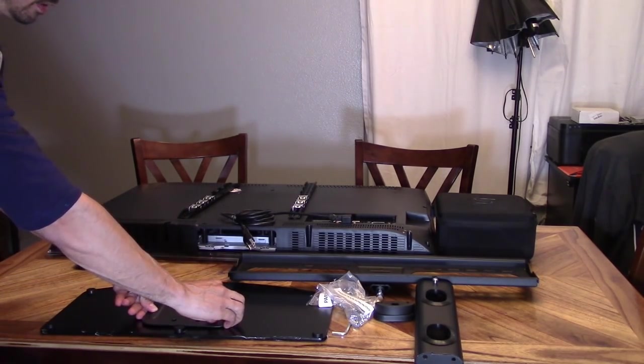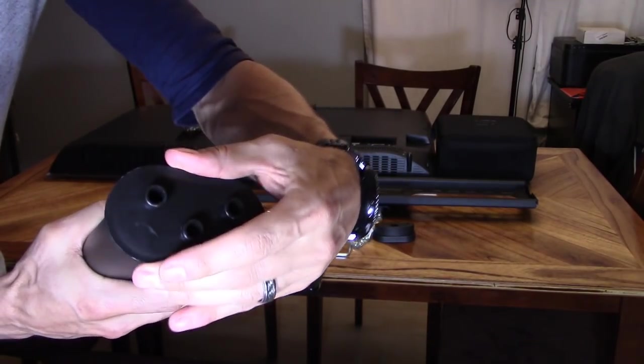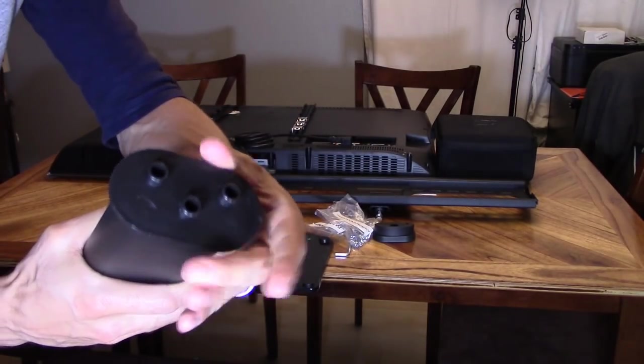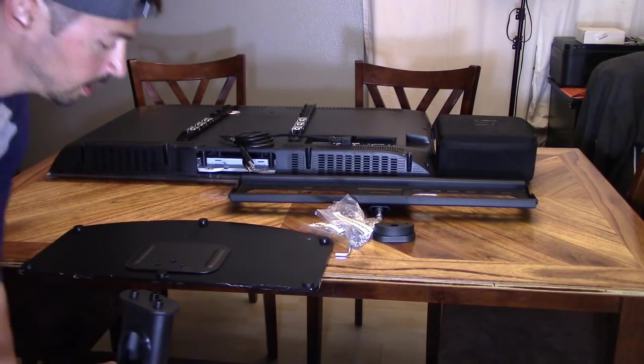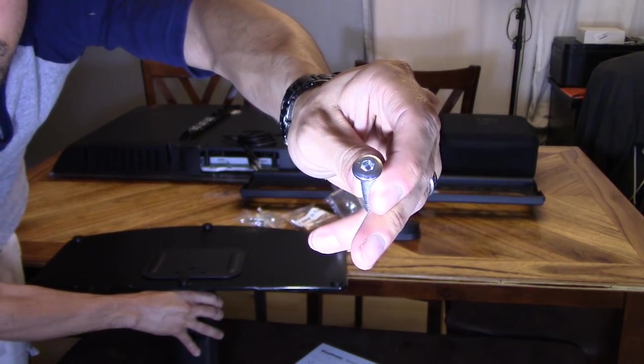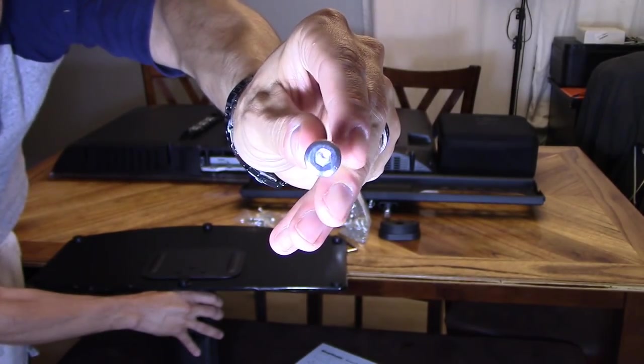Just like that. And it just goes on pretty snug. And then you want to place it under, right here. So, we're going to take my flat screws right here. And you're going to use the Allen key.